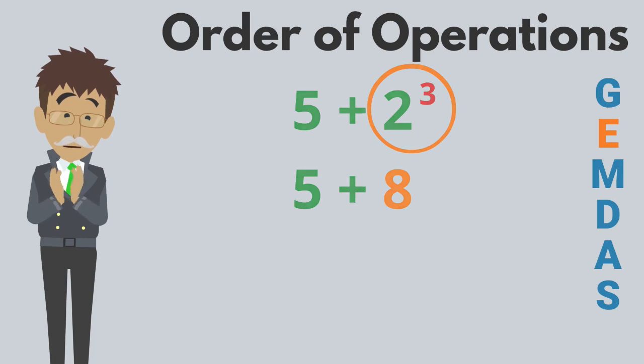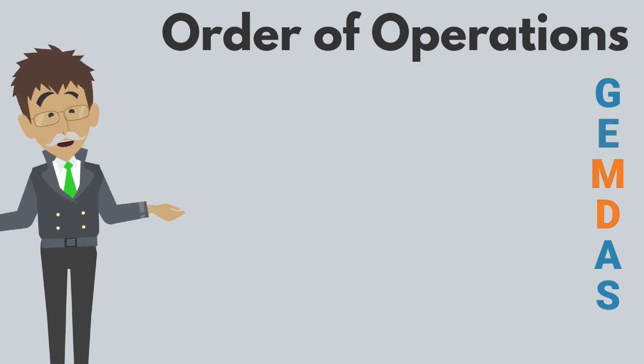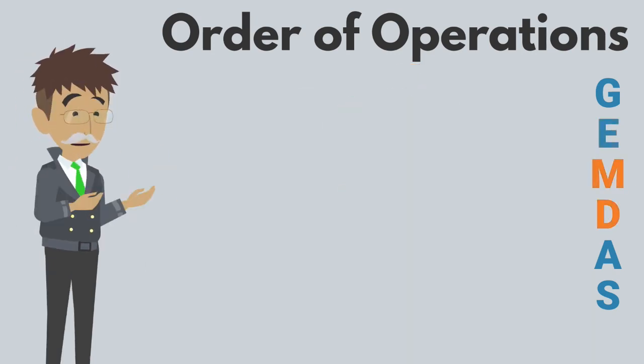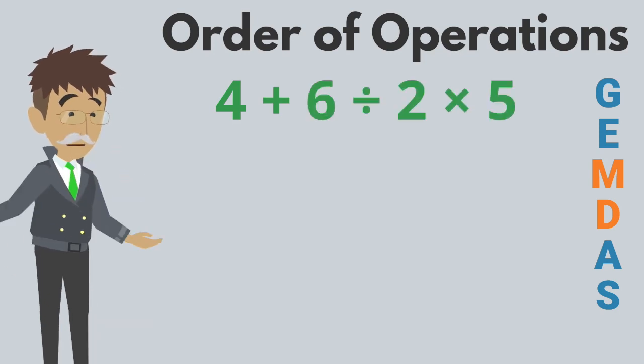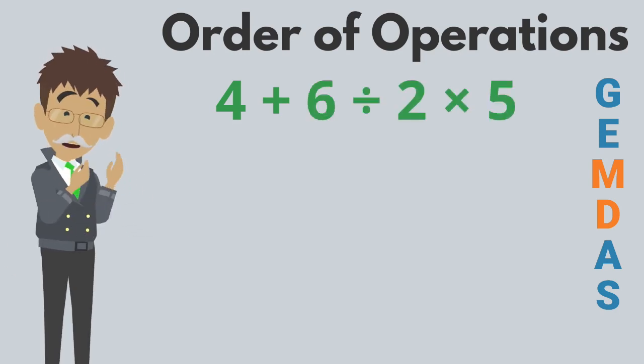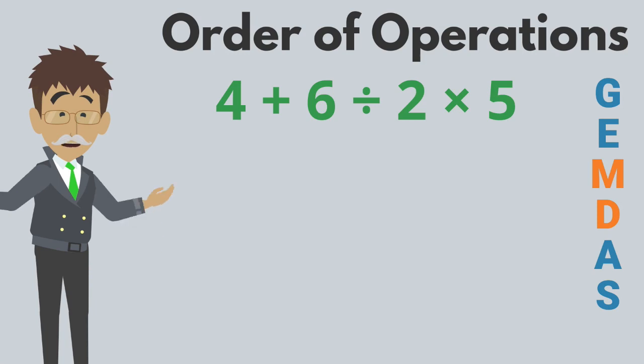After grouping symbols and exponents, we move on to multiplication and division, working from left to right. In 4 plus 6 divided by 2 times 5, we perform the division first to get 4 plus 3 times 5.